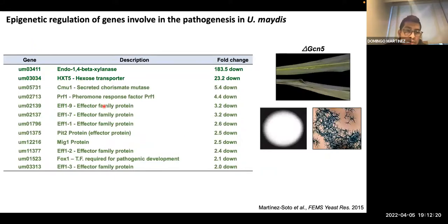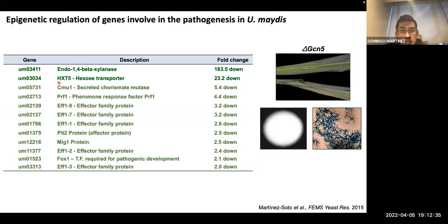You can see here some effector genes and some transcription factors — for example, this is a master transcription factor involved in regulating the whole infection process in Ustilago, and other effector genes which are very important for plant colonization because they induce metabolic changes in the plants during colonization by the fungus. All these kinds of genes with important roles in pathogenesis and virulence are downregulated in the mutant.